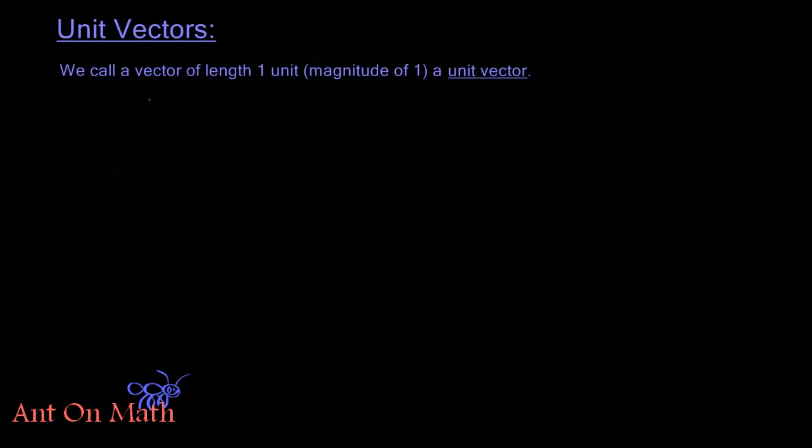So first, what is a unit vector? We call any vector of length one or magnitude of one a unit vector. A unit vector can point in any direction, but what's important is that to be a unit vector it needs to have a magnitude of one.